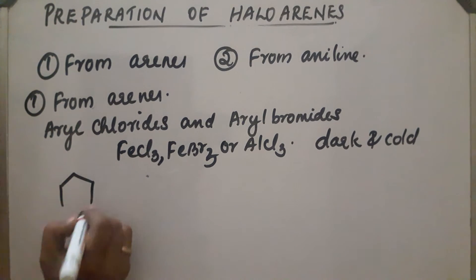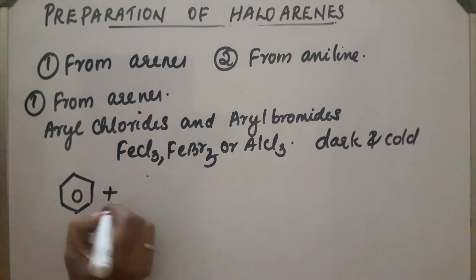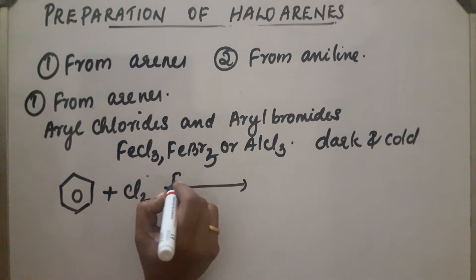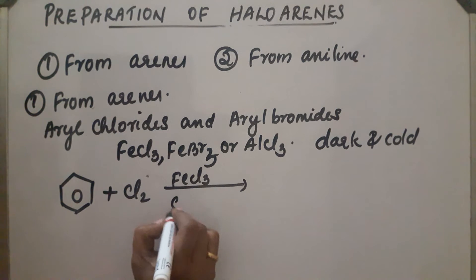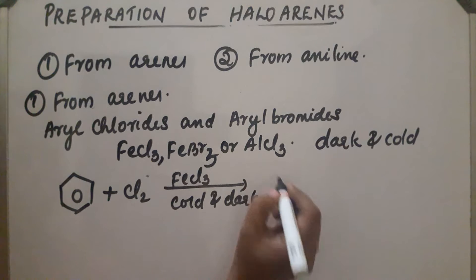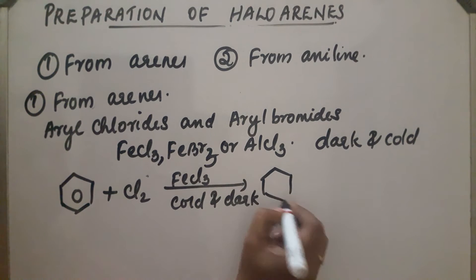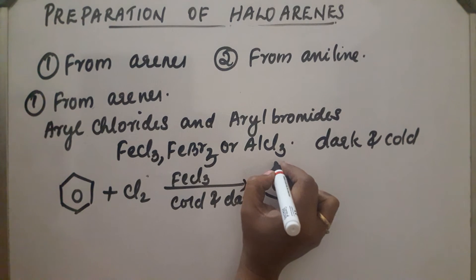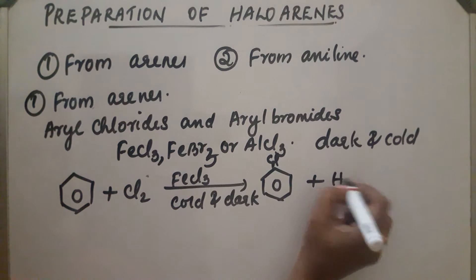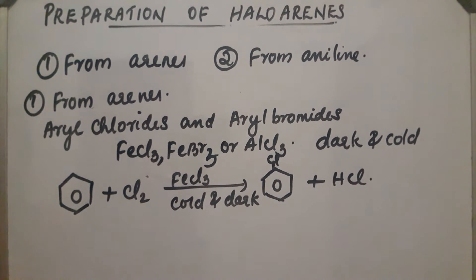Aromatic hydrocarbons on reaction with chlorine — on chlorination in the presence of FeCl3, cold and dark — the reaction takes place and aryl chloride is obtained, plus HCl. A similar reaction takes place in the case of bromine — on direct bromination, bromobenzene is obtained.